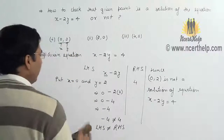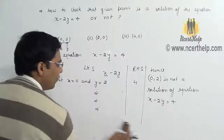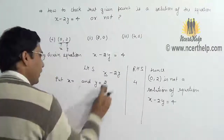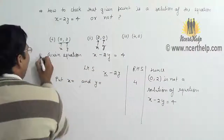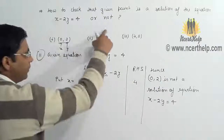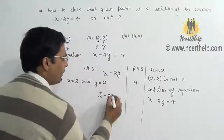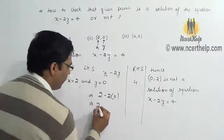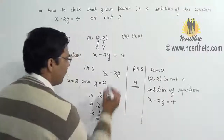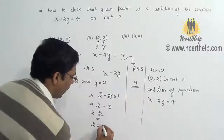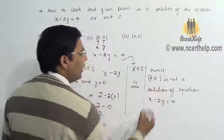To check for the second point: in the second point, X equals 2 and Y equals 0. So here I have replaced X with 2 and Y with 0. Plugging in: 2 minus 2 times 0 equals 2 minus 0 equals 2. RHS is still 4. So LHS is not equal to RHS.